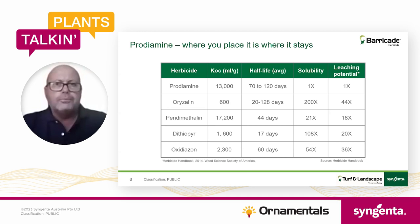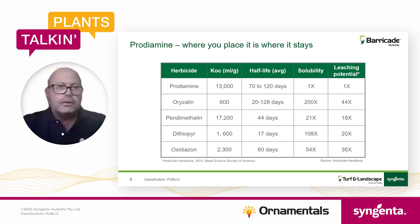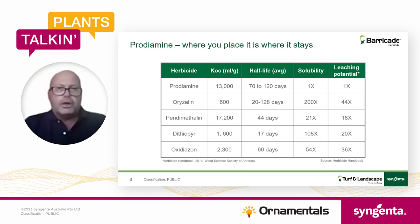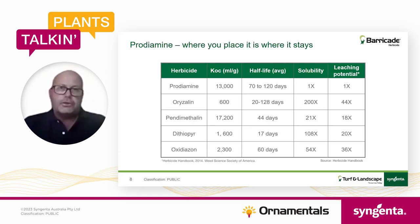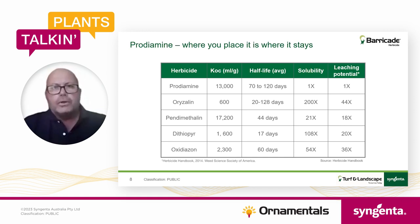Very low solubility means it's not going to move — it's what would be called non-mobile. As solubility numbers increase, the concern is that when you apply a pre-emergent herbicide and then have rainfall three, four, or seven days later, the higher the solubility index, the greater the potential for that active ingredient to move off-target — either leaching lower in the profile or moving laterally down slopes. For prodiamine, the active ingredient in Barricade, when you combine its ability to bind to carbon, its half-life, and its solubility, it has very little to no leaching potential.